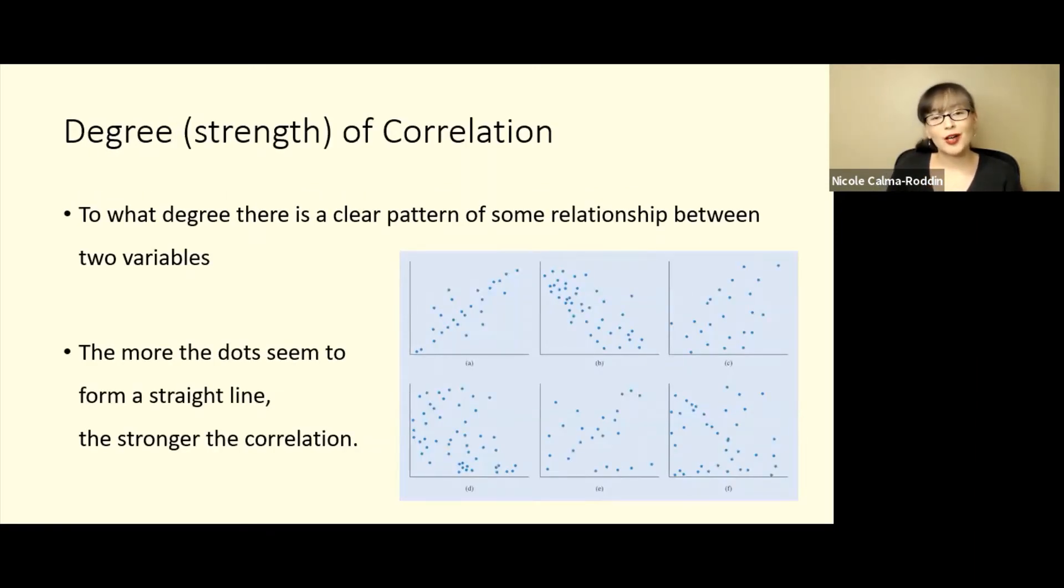Specifically, when we talk about degree or strength of a correlation, we're talking about to what degree there is a clear pattern of some relationship between two variables, and we can tell this based on to what degree the dots seem to form a straight line.